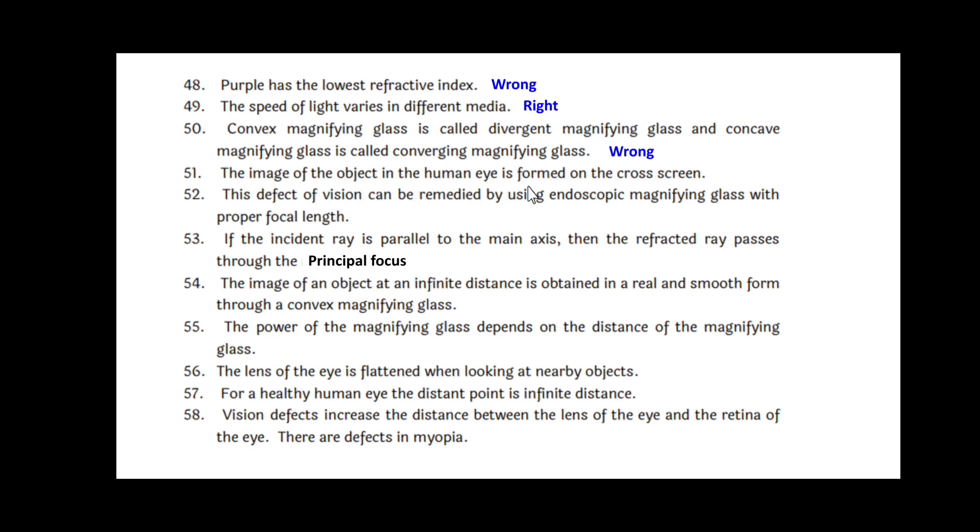The image of the object in the human eye is formed on the cross screen. That is wrong. The defect of vision can be remedied by using endoscopic magnifying glass with proper focal length. Wrong. If the incident ray is parallel to the main axis, then the refracted ray passes through the principal focus. That is right. The image of an object at infinite distance is obtained in a real and smooth form through a convex magnifying glass. Wrong.